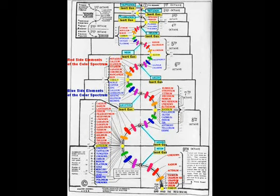This is the spiral periodical table created by Walter Russell to show how the elements are born from the stillness of space and in-wound octave by octave from the inert seed gases to create all of the various conditions of electric motions which mankind calls the atomic elements.